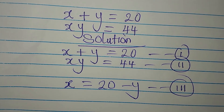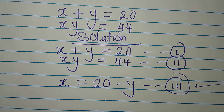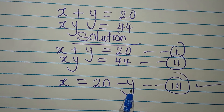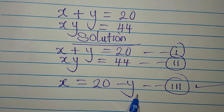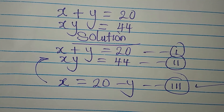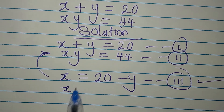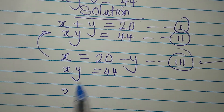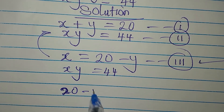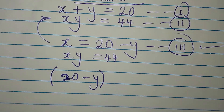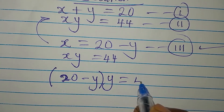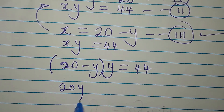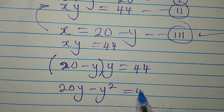We have equation 3 because we want to use it to find x, and that can happen once we have the value of y. Now we substitute equation 3 back into equation 2. So xy equals 44 becomes: x is 20 minus y, giving us (20 minus y) times y equals 44. Opening the bracket: 20y minus y squared equals 44.